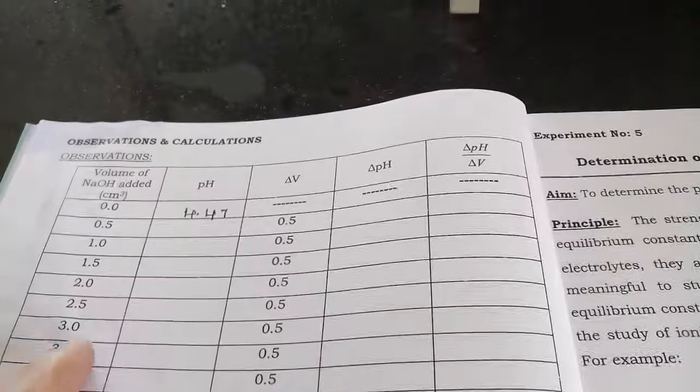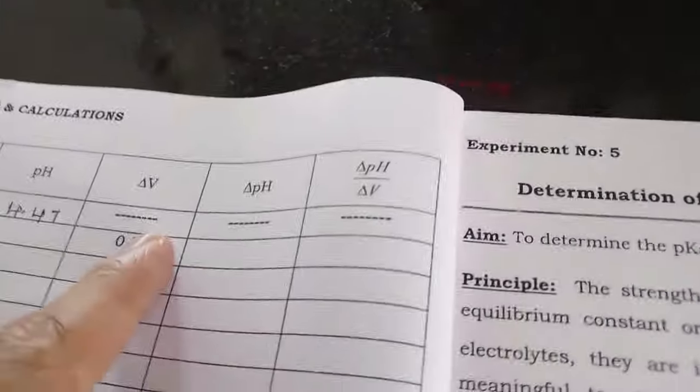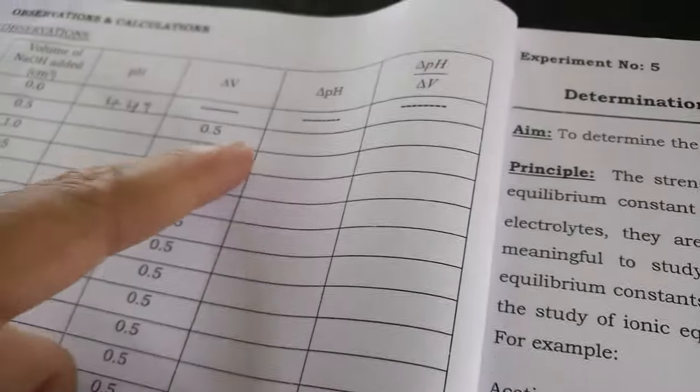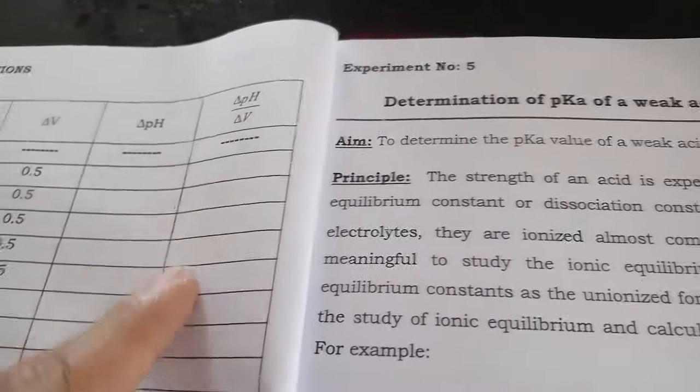So here we have volume of NaOH added in cm³, pH, delta V, delta V is nothing but the change in volume of NaOH that is 0.5, delta pH, change in pH, delta pH by delta V. Based on this we are going to plot the graph.